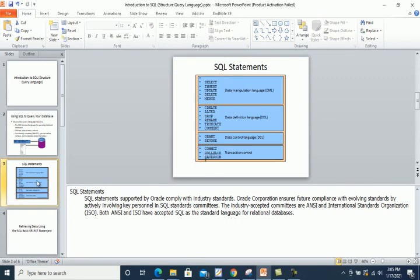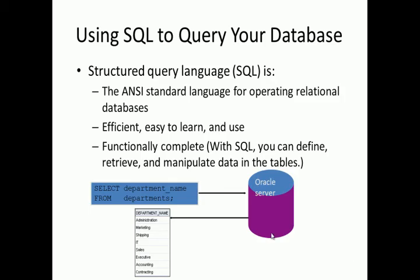Let's look at this diagram. As a database user, suppose we issue the following SQL statement: SELECT department_name FROM department. First, the database checks whether the department table exists, then whether the department_name column exists inside that table. If everything is okay, you will get your desired result.